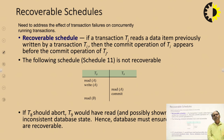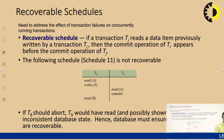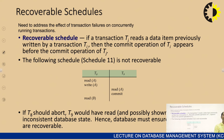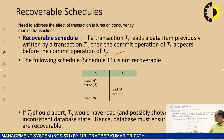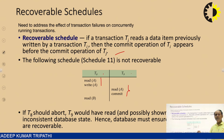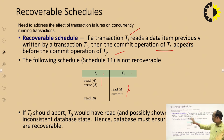We also have the concepts of recoverable schedule, cascadeless schedule, and cascading rollback. A recoverable schedule is one that can be recovered from current transactions. If transaction Tj reads a data item previously written by Ti, then the commit operation of Ti must appear before the commit operation of Tj. In the example of T8 and T9, we check whether this condition is met to determine if the schedule is recoverable.